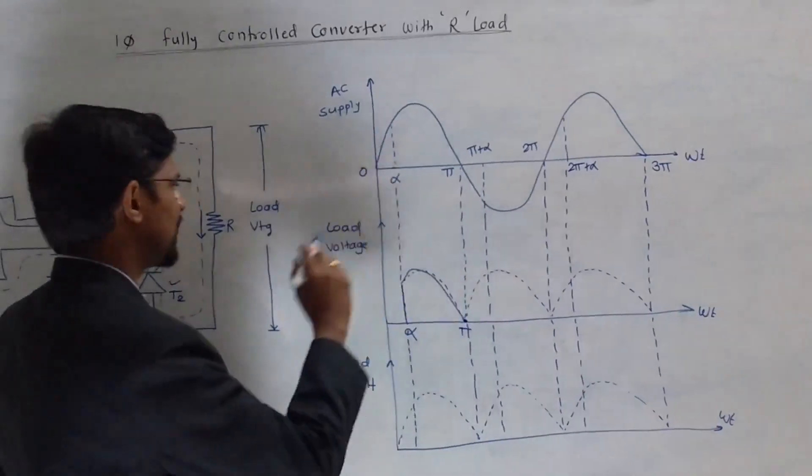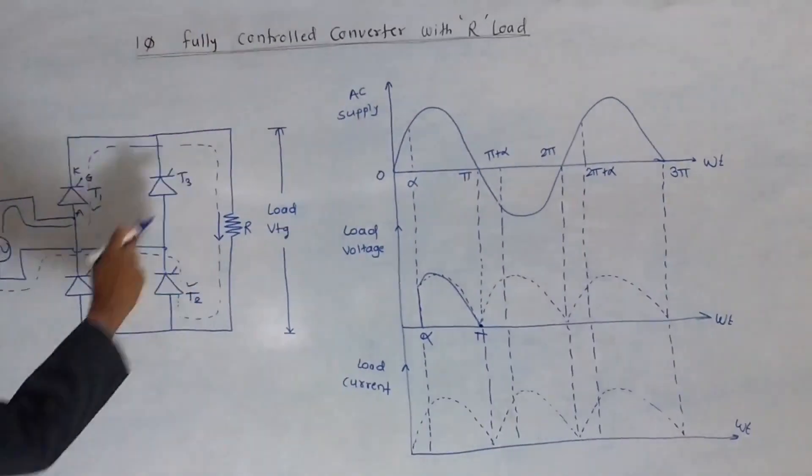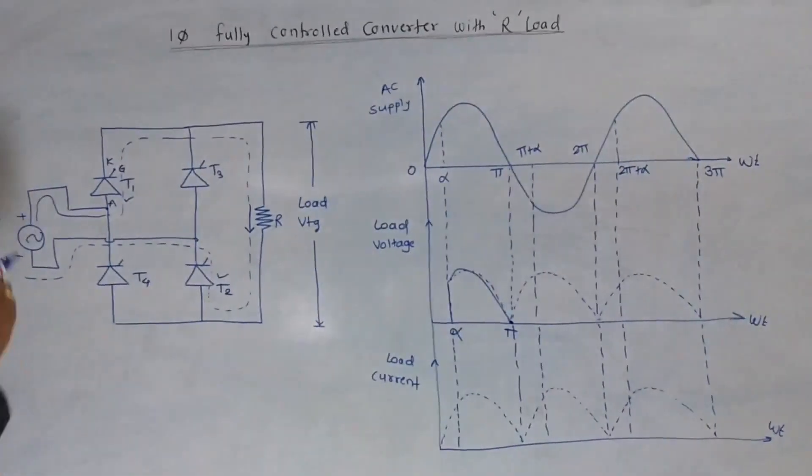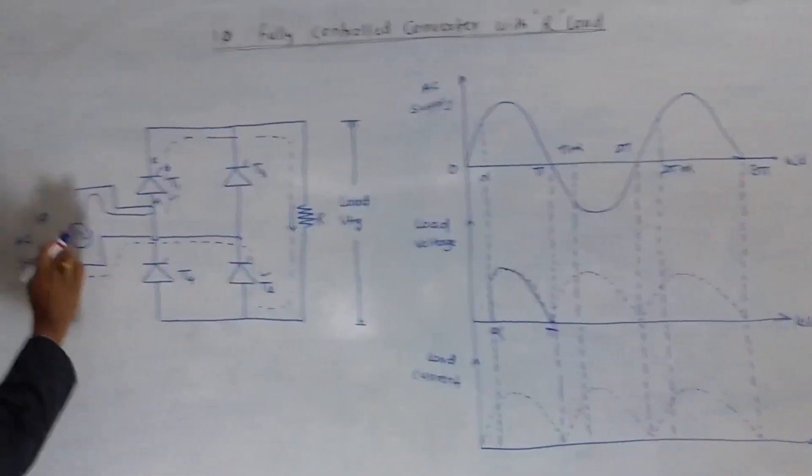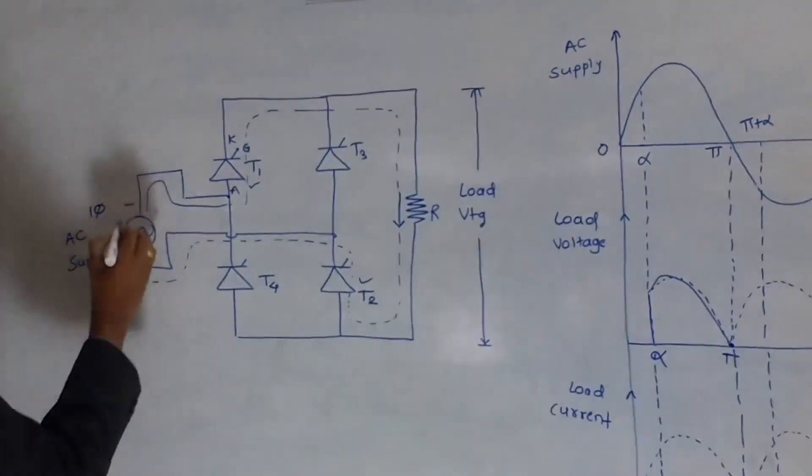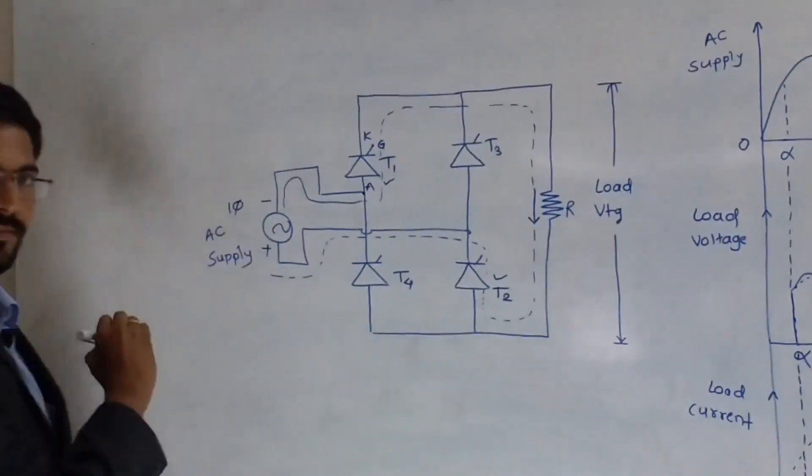And for negative half cycle, thyristors T3 and T4 are in forward bias. And they are going to conduct. If you consider the negative half cycle, they are exactly equal to the first one. Negative half cycle and positive half cycle.